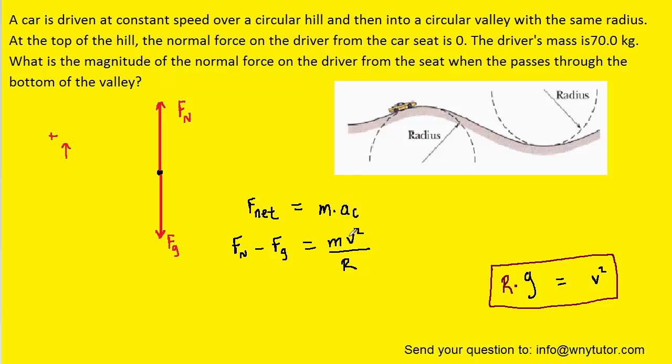We've replaced the centripetal acceleration with v squared divided by R. We're trying to solve for the normal force in this question, so we can add Fg over to the other side.